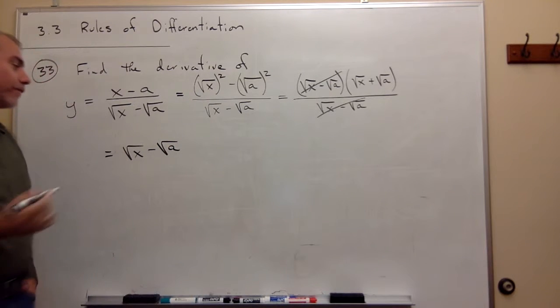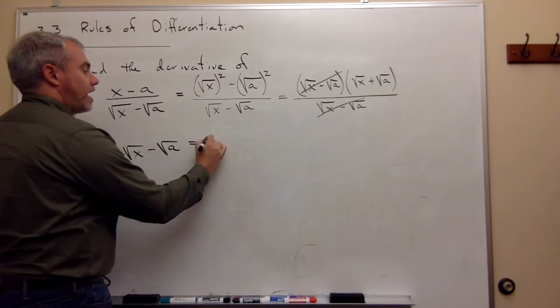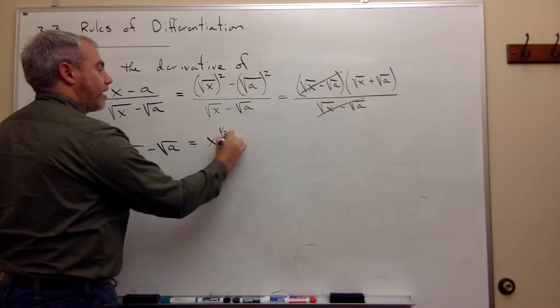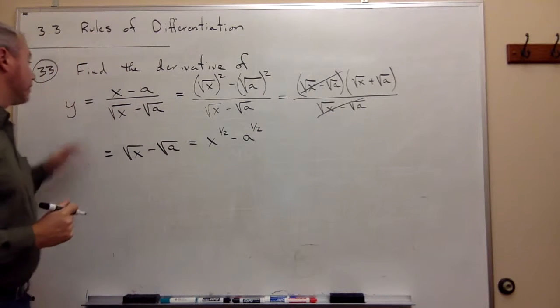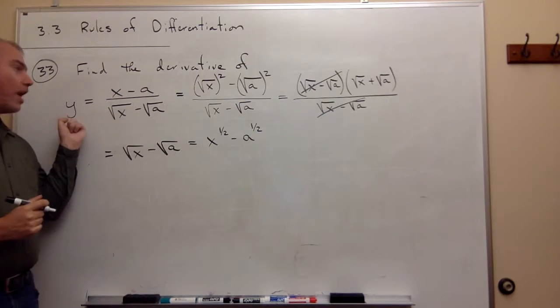And I'm left with the square root of x plus the square root of a. Now, if you prefer, I could write this as x to the 1 half power minus a to the 1 half power. All of this is still y.